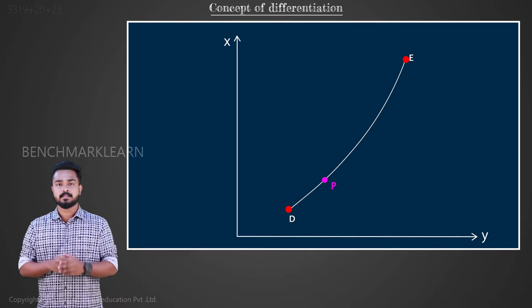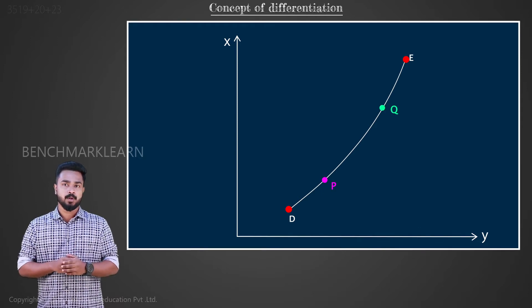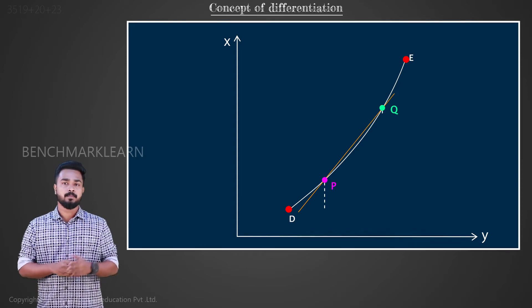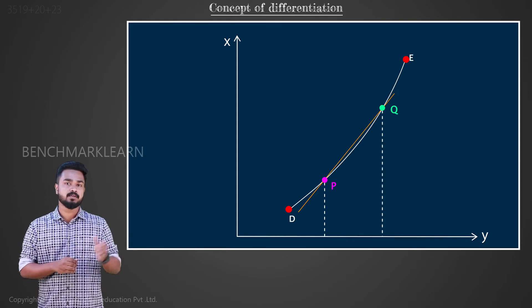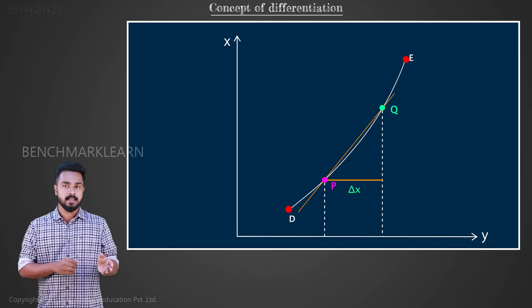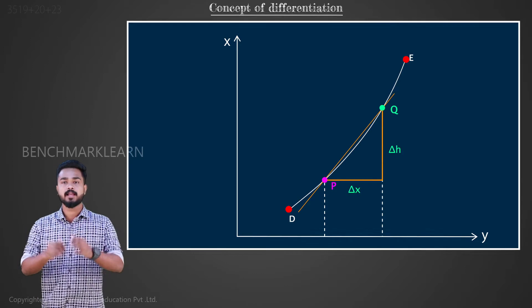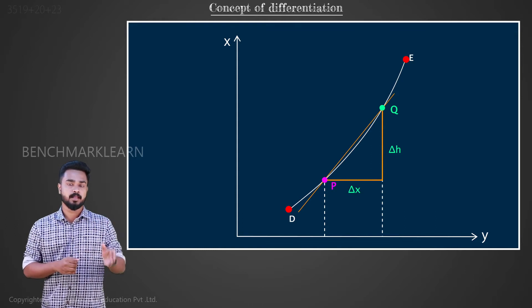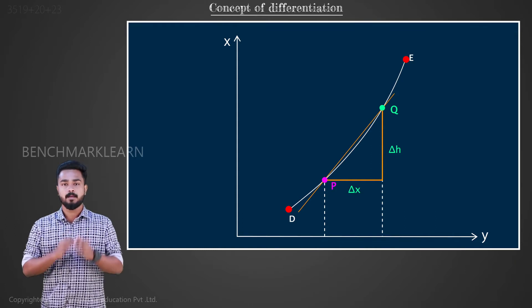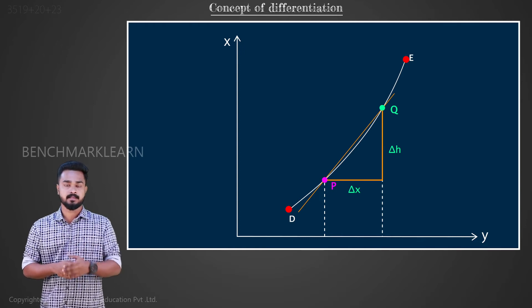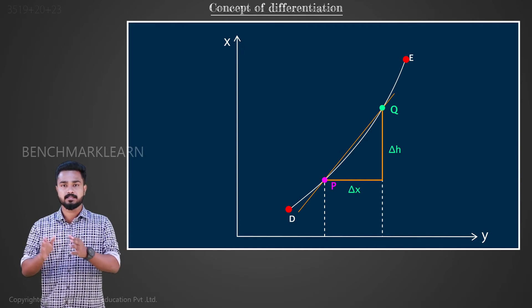For this, let's take a point Q which is close to P. Let P and Q be separated by a horizontal distance of Δx and a vertical distance of Δh. We can calculate the average slope between P and Q by calculating Δh by Δx as we did in the previous cases.